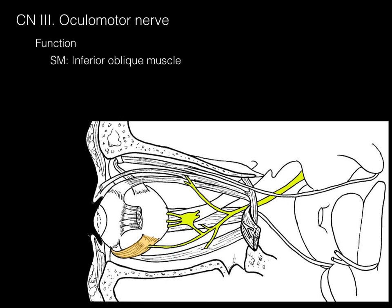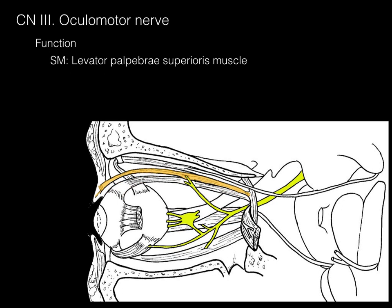The oculomotor nerve provides somatic motor innervation to the inferior oblique muscle, the inferior rectus, the medial rectus, the superior rectus, and the levator palpebrae superioris — the muscle that elevates the eyelid. The cell body is in the midbrain; it's a motor neuron arising from a structure homologous to the ventral horn gray matter, called the oculomotor nucleus, which sends off motor neurons to innervate all these muscles.